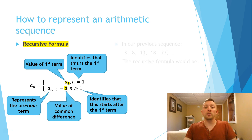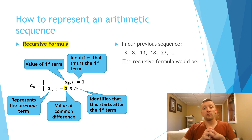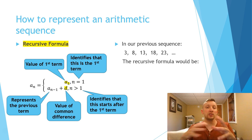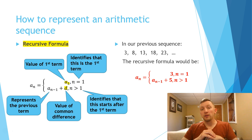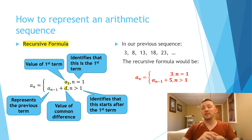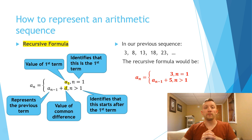So thinking back to our previous sequence, to write a recursive formula we always write a-sub-n equals, then use that fancy bracket. The first term was 3, identified by n equals 1. Then after we use that first term of 3, we add 5 each time, so we'd have a-sub-(n minus 1) plus 5. Notice the only numbers in the recursive formula are 3 for the first term and 5 for the constant difference — everything else always stays the same.